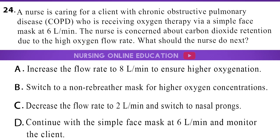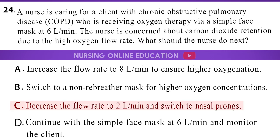What should the nurse do next? A. Increase the flow rate to 8 liters per minute to ensure higher oxygenation. B. Switch to a non-rebreather mask for higher oxygen concentrations. C. Decrease the flow rate to 2 liters per minute and switch to nasal prongs. D. Continue with the simple face mask at 6 liters per minute and monitor the client. The answer is option C: Decrease the flow rate to 2 liters per minute and switch to nasal prongs. Thank you for watching.